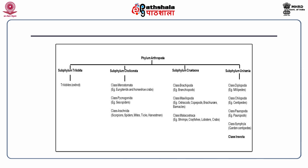The overall classification of phylum Arthropoda includes subphylum Trilobita, which contains the class of trilobites — now extinct. Subphylum Chelicerata includes class Merostomata, class Pycnogonida, and class Arachnida. Subphylum Crustacea includes class Branchiopoda, class Maxillopoda, and class Malacostraca. Subphylum Uniramia includes class Diplopoda, class Chilopoda, class Pauropoda, class Symphyla, and also the class Insecta.